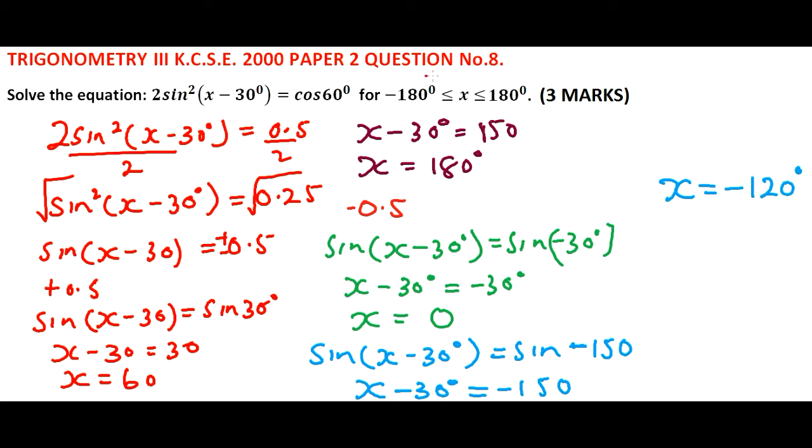These are the values that satisfy our equation. One is x equals 60, two is 180, three is 0, and finally we have minus 120.